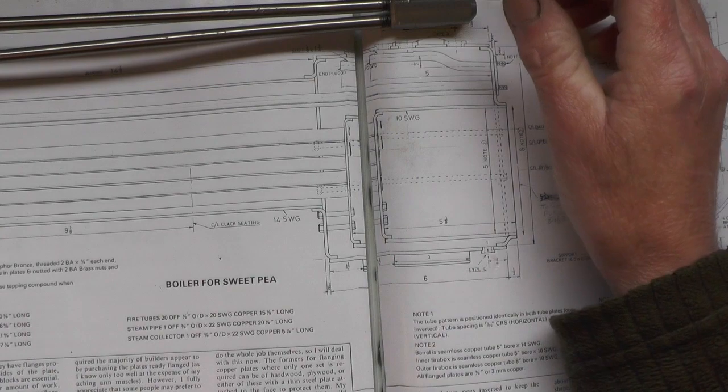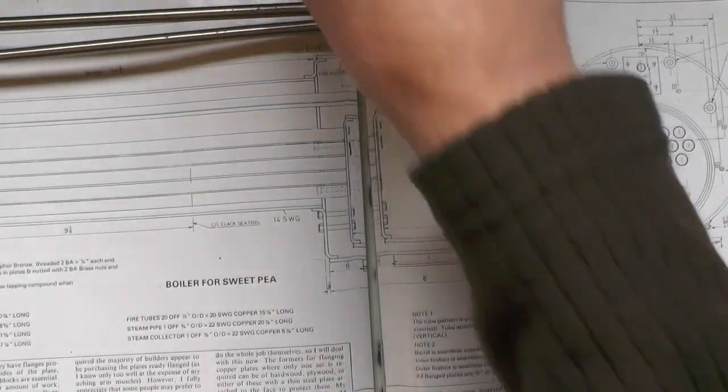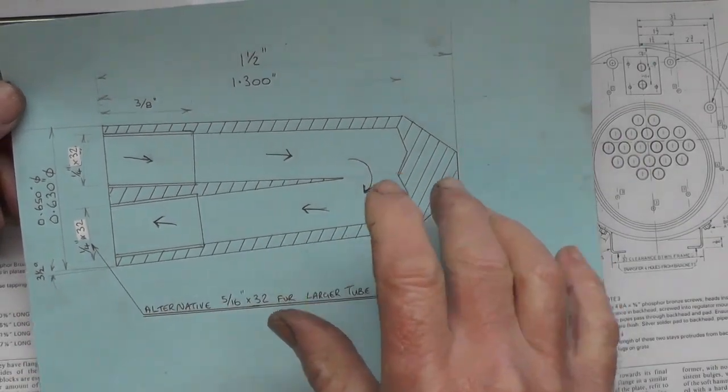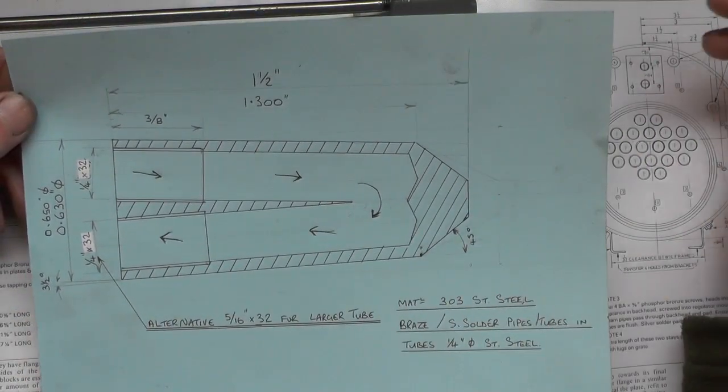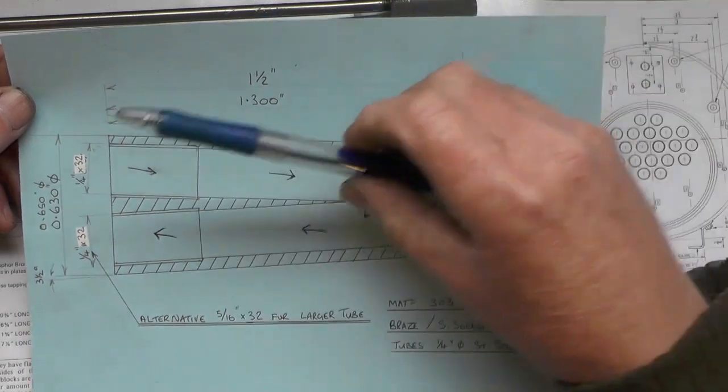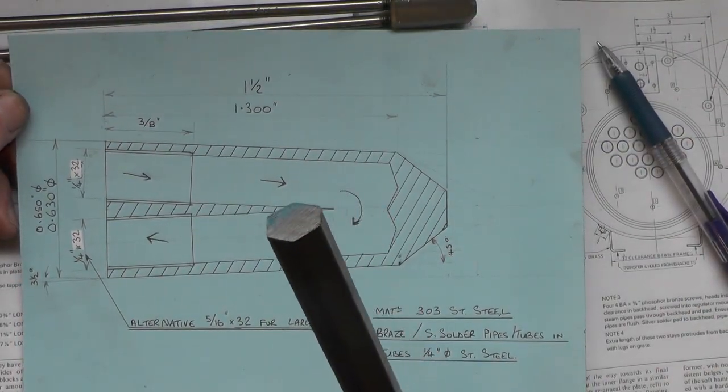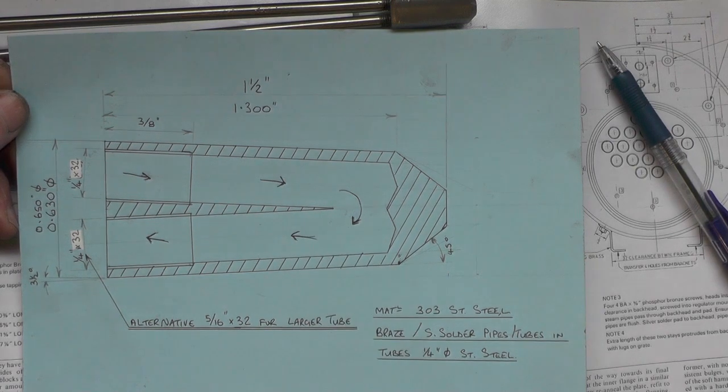I'll show you this drawing that I've come up with and I've done a few prototypes just to make sure this is going to work. I'm calling this an adapter for want of a better word and I'm using some 303 hexagonal stainless which is 0.600 across flats.